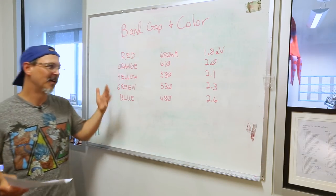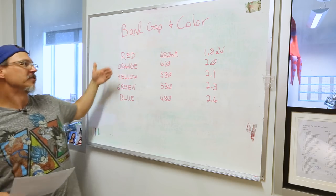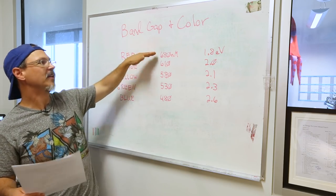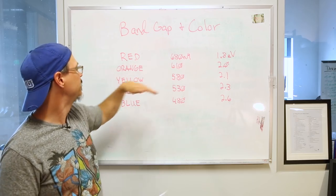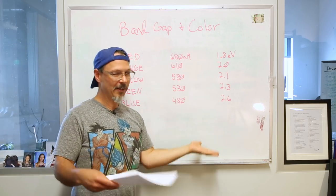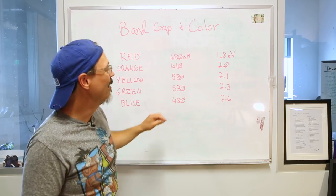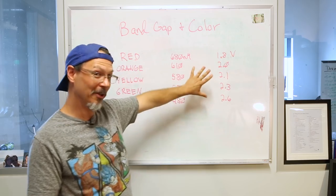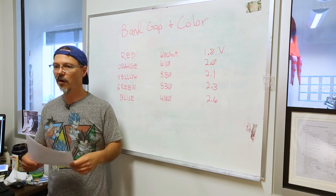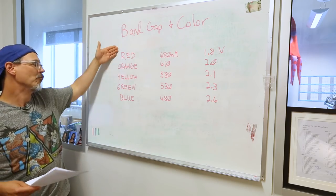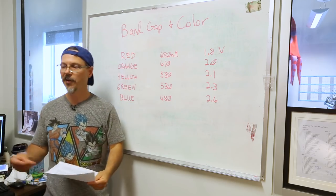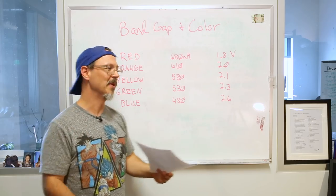What I have written here is a matrix of colors versus band gap in electron volts. Red at 680 nanometer wavelength, 1.8 electron volt. Orange at 2.0, yellow at 2.1, green at 2.3, blue at 2.6. These are electron volts which don't directly correspond to voltage, but it's close. In practice when you look at data sheets, you'll see V forward anywhere between 2 and 3 volts ranging from red to blue. This is how the correspondence goes for color versus band gap energy. If you haven't been in college, now you know what band gap is and you can talk intelligently about it.